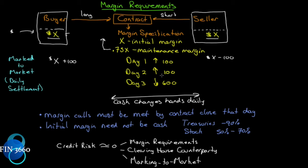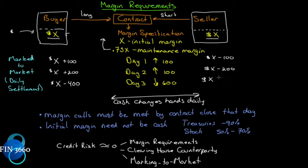On day two, the contract is up another hundred dollars. So the buyer will have X plus $200, and the seller will have X minus $200. On day three, the contract falls $600. The buyer's account will have a total of X minus $400 — the $200 gain disappears plus another $400 loss. Whereas the seller will now have a total of X plus $400.